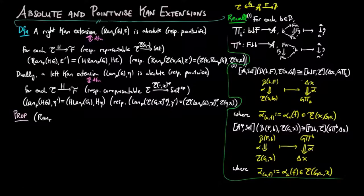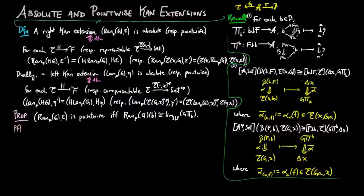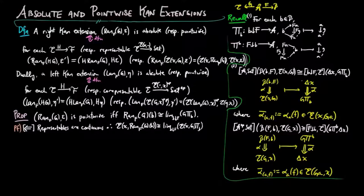We have that the right Kan extension of g along f is point-wise if and only if Ran(f,g) on object b is the limit of g∘π_b. For the reverse direction, representables preserve all limits which exist. Therefore the set E(x, Ran(f,g)(b)) is isomorphic to the limit in Set of E(x, g∘π_b), which is isomorphic to the right Kan extension of E(x, g−) along f by hypothesis. Therefore the right Kan extension is point-wise.